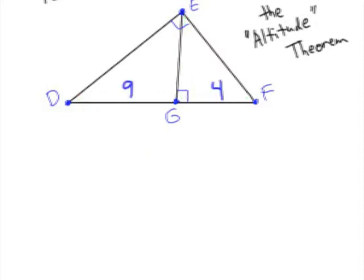Now let's look at a real example. Here is a right triangle with an altitude drawn from the right angle, and it's separating the hypotenuse into two parts. We have one side that's nine and another side that's four. According to our theorem, it says that the altitude EG is the geometric mean between the nine and the four.